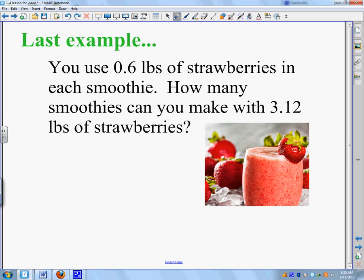Last example. You use 0.6 pounds of strawberries in each smoothie. How many smoothies can you make with 3.12 pounds of strawberries? So, start with 3.12 pounds of strawberries, and I want to divide it into smoothies that are 0.6. Try this problem, and then come back.